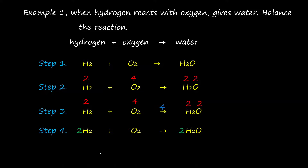The fifth step is to check that the equation is balanced — the atoms on the reactant side must equal the atoms on the product side. Here, 2 times 2 equals 4 hydrogen atoms on the reactant side, and in the product side 2 times 2 equals 4 hydrogen atoms — balanced. For oxygen: 2 oxygen on the reactant side, and also 2 oxygen on the product side — balanced.